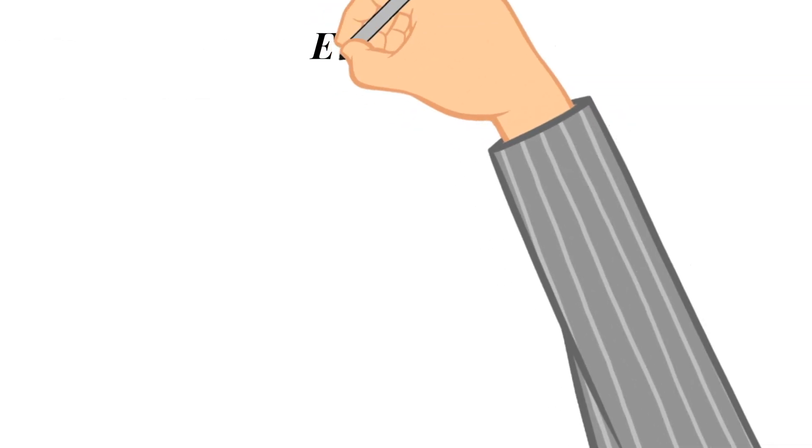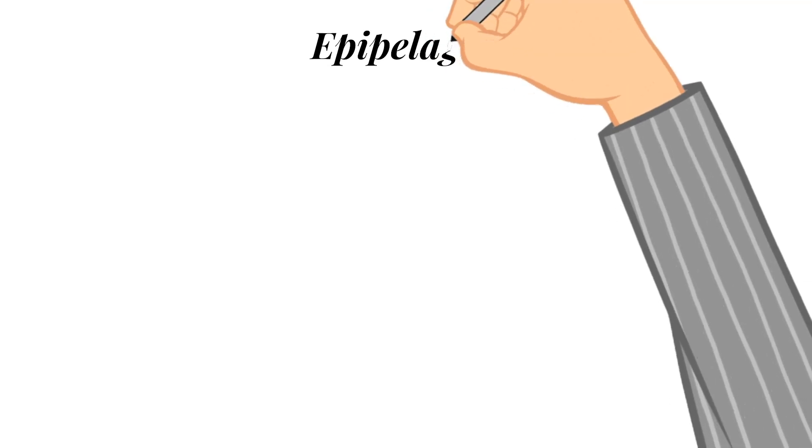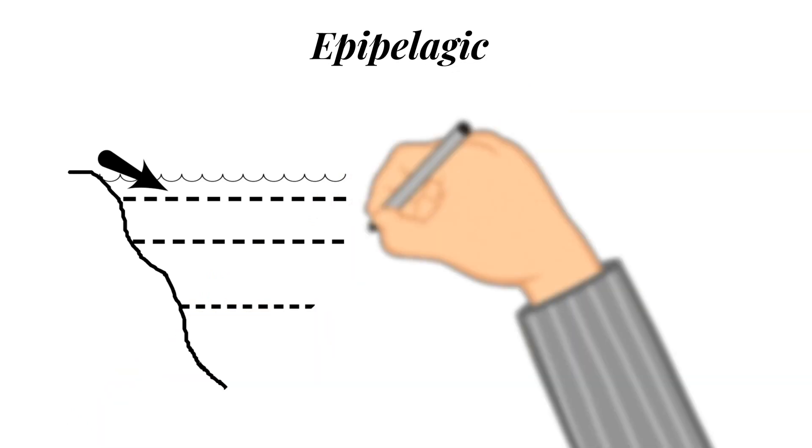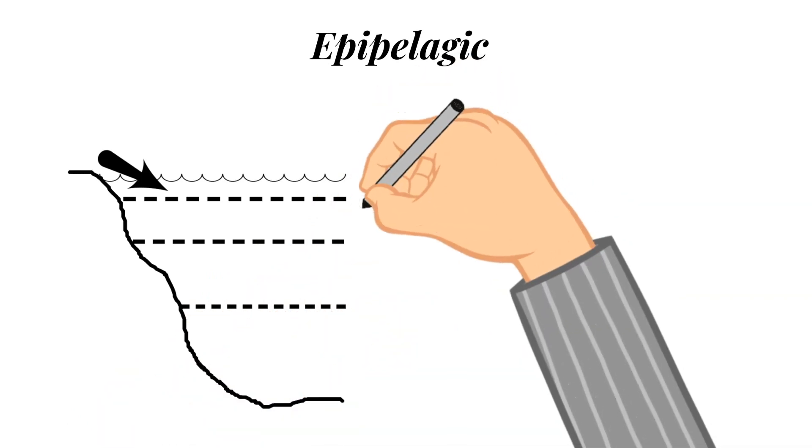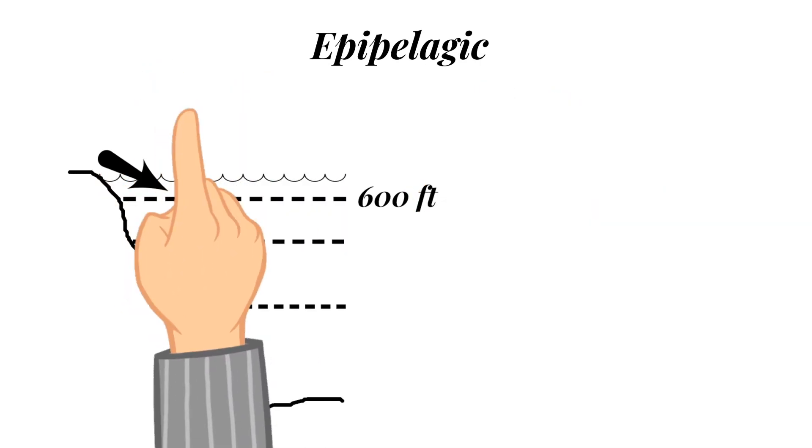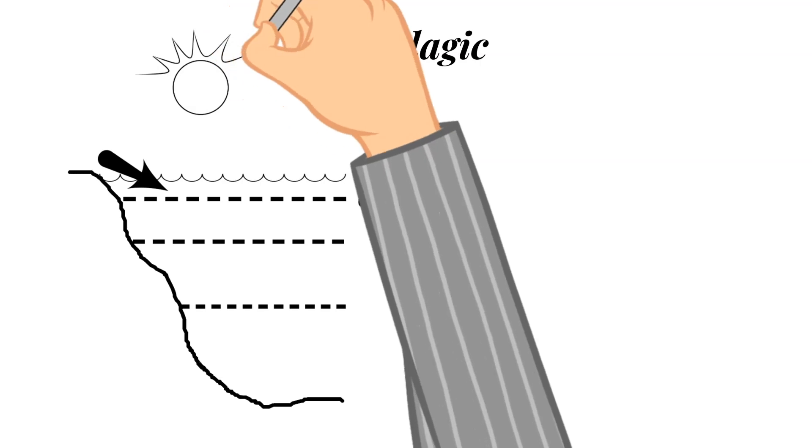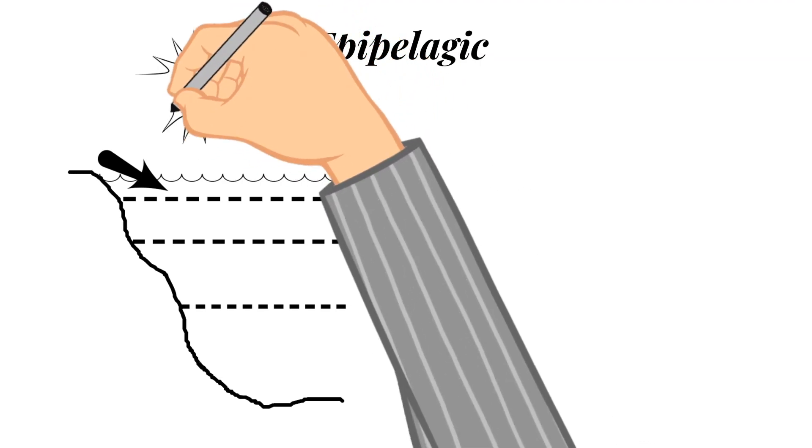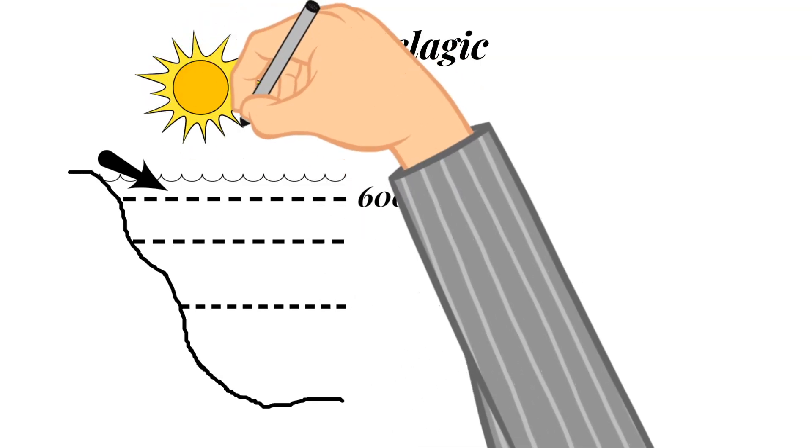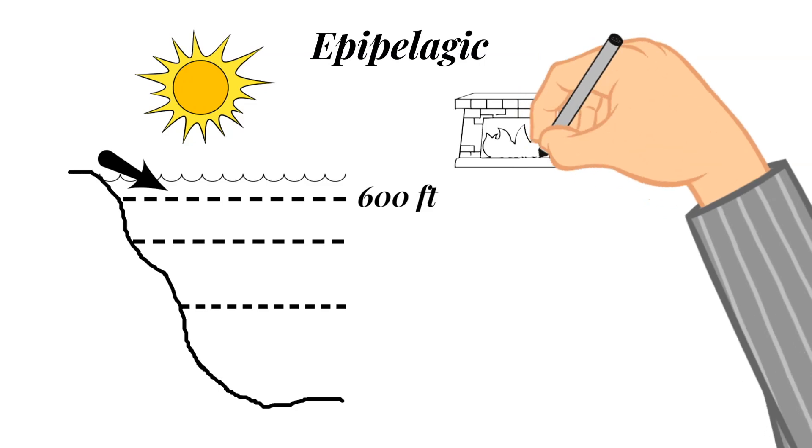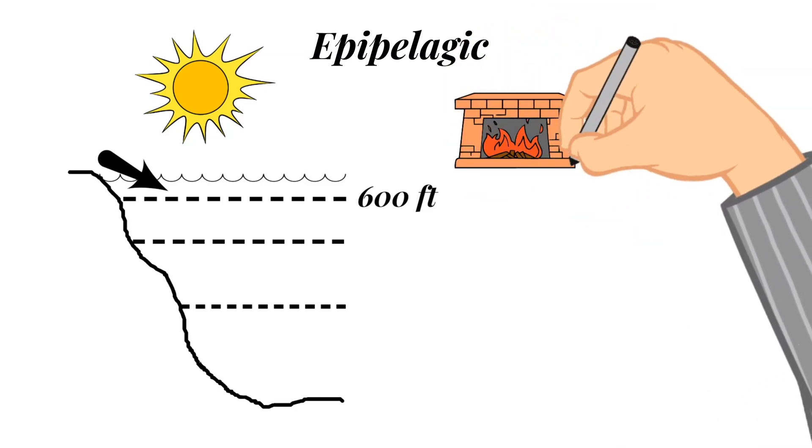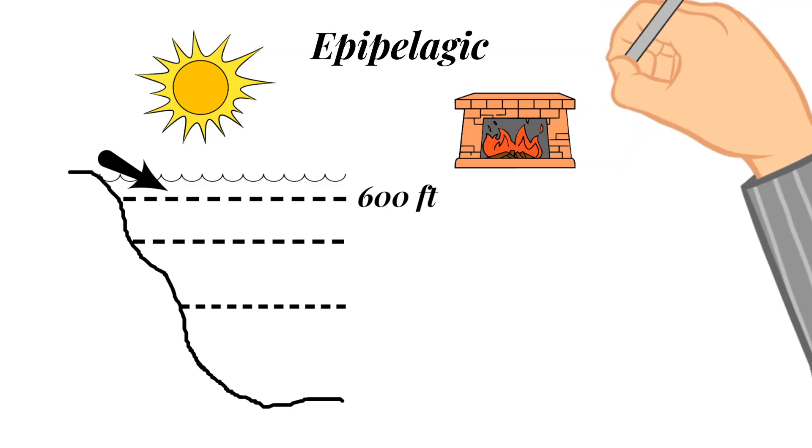So the layer that is closest to the surface or the shallowest layer is called the epipelagic layer. And it extends from the surface of the water to about 600 feet deep. This layer is illuminated completely by the sun. And it is called the sunlight zone for this region. And because the sun lights this zone of water, it is the warmest layer. And the sunlight in this layer is also enough light for the process of photosynthesis to take place.